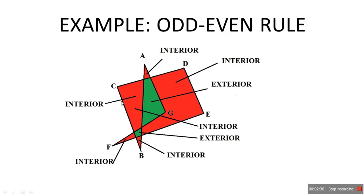If you think this might not be correct, you can try it again from the same region and draw a line somewhere else. How many edges are intersecting? 1, 2, 3 — 3 is an odd number, so again it is the interior region. You can check it out in any direction, just make sure it does not pass through a vertex. That is the only condition. From over here to the outside: 1, 2, 3 — 3 points, an odd number, so it is an interior region. This is the odd-even rule.